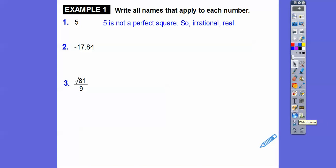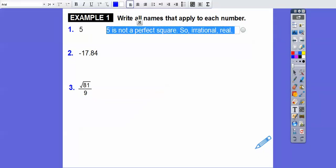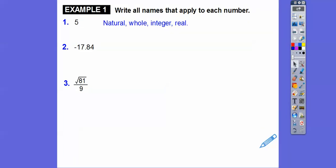I made a mistake earlier — let's say 5 is natural, it's whole, it's an integer, and it's real. If it was the square root of 5, it would be an irrational number. I'm going to replace that answer because I give these lessons to teachers in my district.